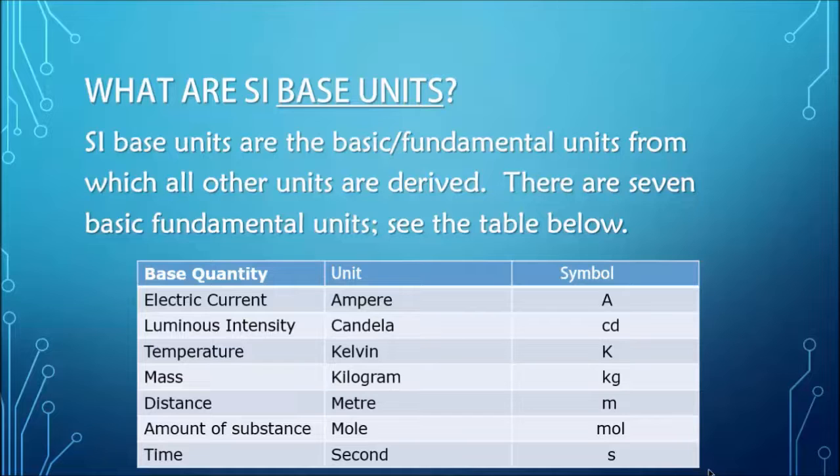So we have electric current, luminous intensity, temperature, mass, distance, amount of substance, and time. And as you can see, associated with each base quantity is its unit and its symbol.